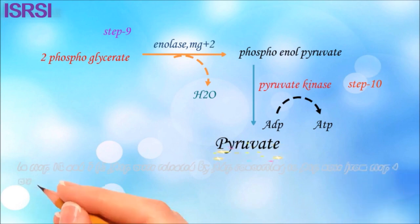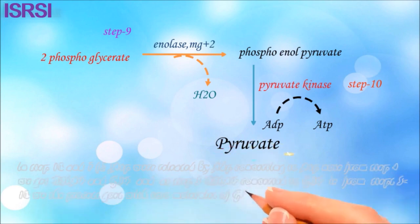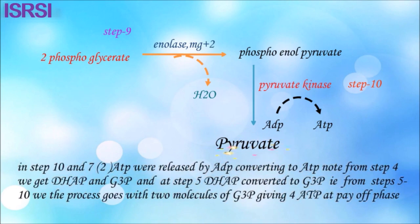It is important to note that in steps 7 and 10, two ATPs are released by ADP being converted into ATP. Furthermore, from step 4 we get dihydroxyacetone phosphate and glyceraldehyde-3-phosphate; at step 5 the dihydroxyacetone phosphate is converted into glyceraldehyde-3-phosphate. So from steps 5 to 10, two molecules of glyceraldehyde-3-phosphate yield four molecules of ATP total in the payoff phase.